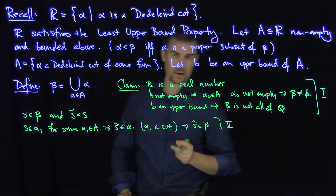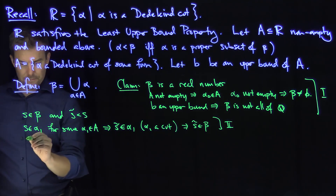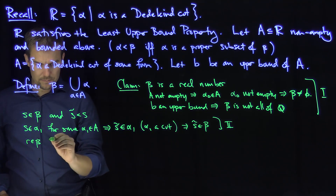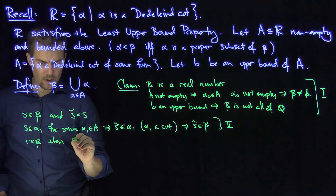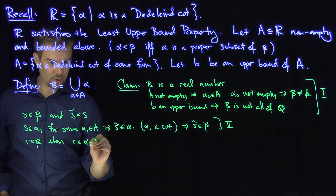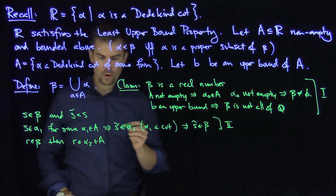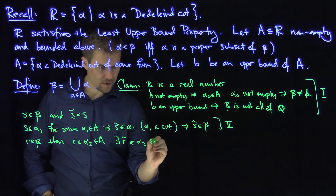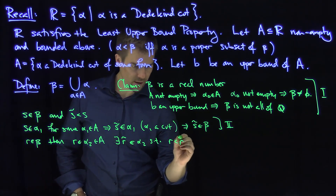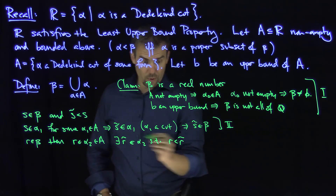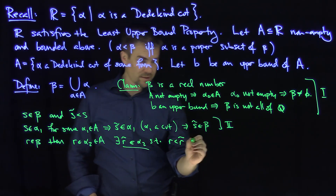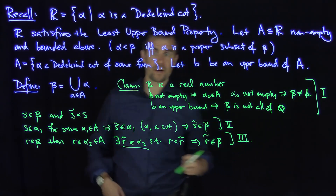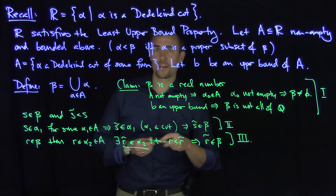Finally, if R is in beta, then R is in alpha-two for some alpha-two in A, which means there exists an R-tilde in alpha-two such that R is less than R-tilde. Furthermore, since R-tilde is in alpha-two, R-tilde is in beta. Therefore it satisfies property three of the cut. So this beta is a real number.